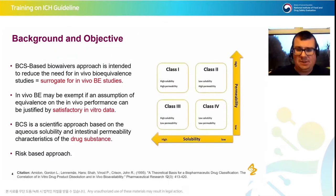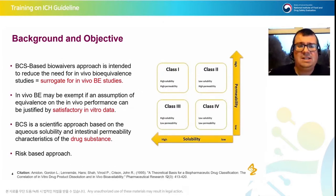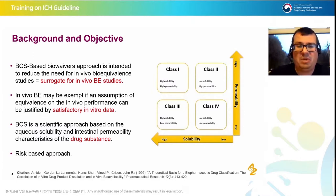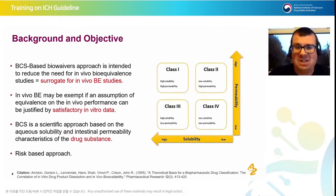A little bit of background. The BCS-based biowaiver approach is based on a simple risk-based classification that Gordon Amidon published with others back in 1995. The first thing to note is it took 25 years to harmonise on this, and we kind of hope that future biopharmaceutical improvements — such as physiologically-based biopharmaceutical modelling — won't take 25 years to reach a harmonised position.